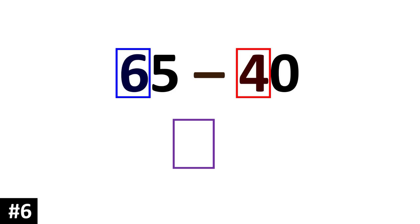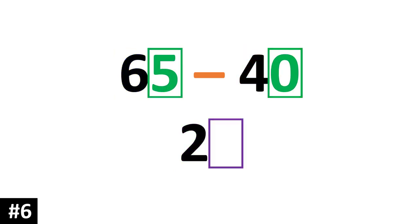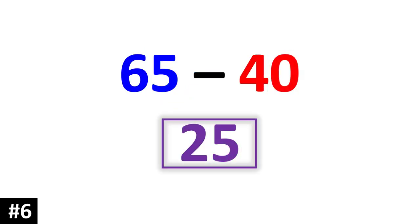65 minus 40. That is 6 10s minus 4 10s, which gives us 2 10s. We look to the ones: 5 minus 0 is 5. So our answer is 25.